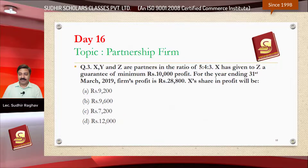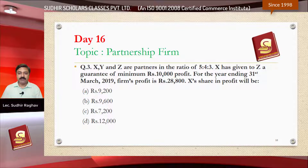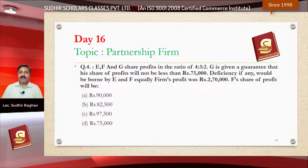Question number three: X, Y, Z are partners in the ratio of 5:4:3. X has given Z a guarantee of minimum rupees 10,000 profits for the year ending 31st March 2019. The firm's profit is rupees 28,800. X's share in profit will be — option A rupees 9200, option B rupees 9600, option C rupees 7200, or option D rupees 12,000.